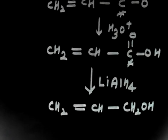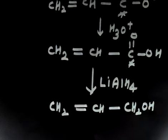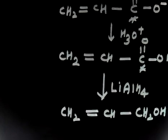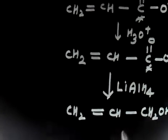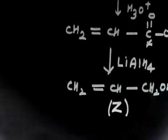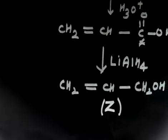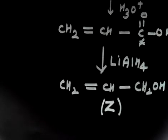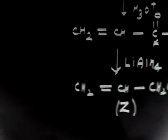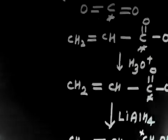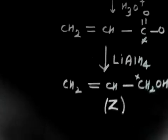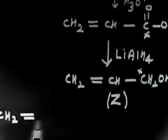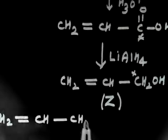The next part of the question says: when compound Z is treated with HBr, one of the products is formaldehyde H2CO. So let us treat Z — which is CH2=CH–CH2OH with the radioactive carbon — with HBr.